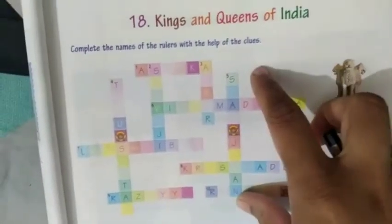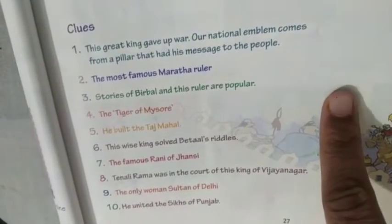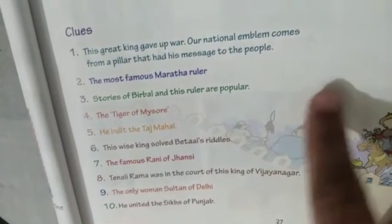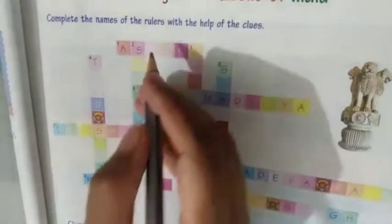So you can see this is a puzzle. Just below this puzzle, you can see some clues are given. You have to read these clues and identify the name of the emperor or empress — the famous rulers of India — and place them according to the numbers given. See the first clue: this great king gave up war. Our national emblem comes from a pillar that had his message to the people. Number 1 is King Ashoka. A-S-H-O-K-A.